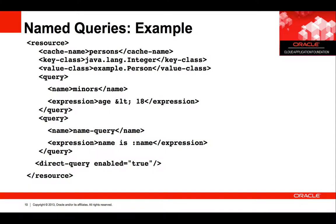Here we defined two named queries for the resource persons in the Coherence REST config.xml file. Notice the query expression for miners has a special character — less than — which is escaped. The named query takes one parameter, name. We also enabled direct queries here.